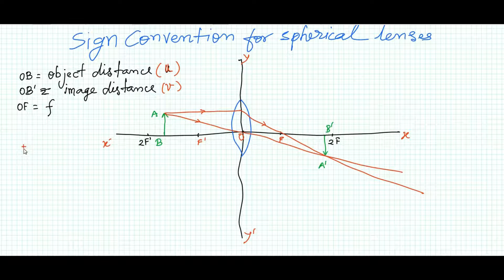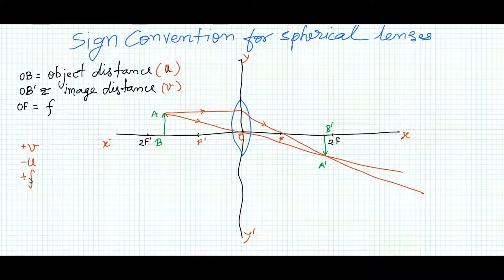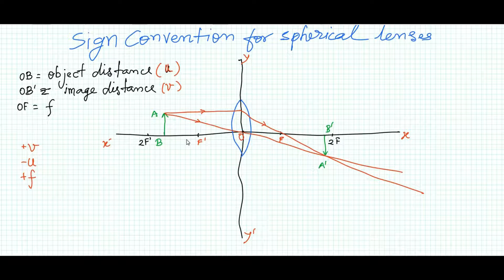The image distance is positive — it is in the positive x-direction, so it is +v. The object distance OB is on the negative axis, so it is negative u. The focus on the right side is also positive. If the focus were on the left side, f would be negative, which occurs when a convex lens forms a virtual image. The same sign convention applies for a concave lens.